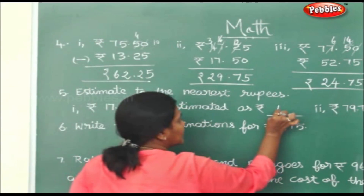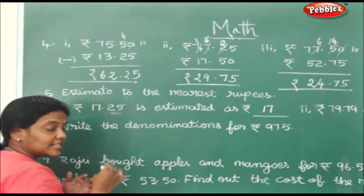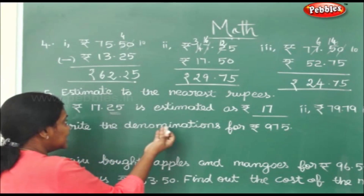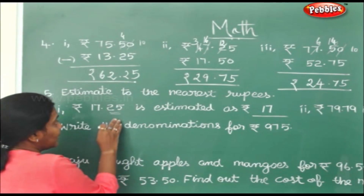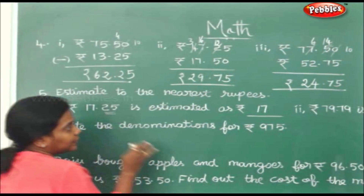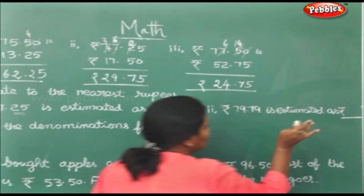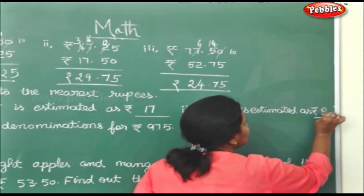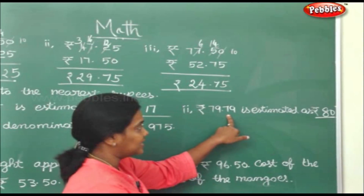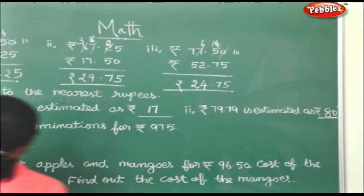Now estimate to the nearest rupee. 17.25 is estimated as 17, because 25 paise is less than 50 paise, so we round down. 79.79 is estimated as rupees 80, because it's above 50 paise, so 79 becomes 80.